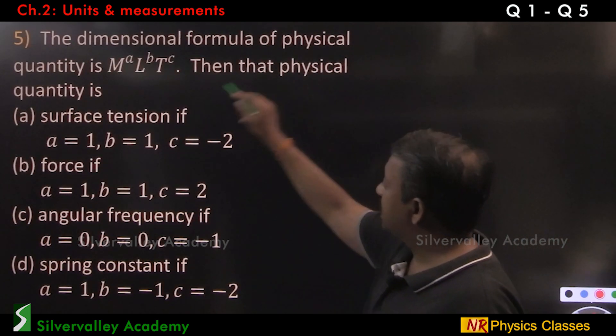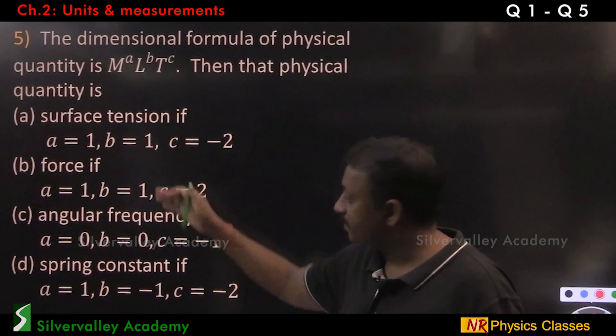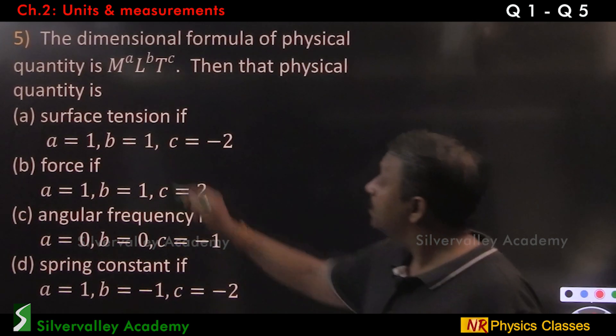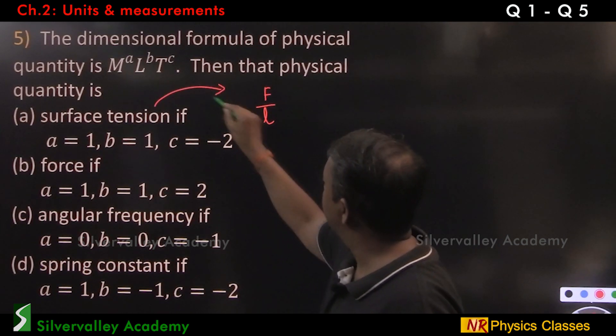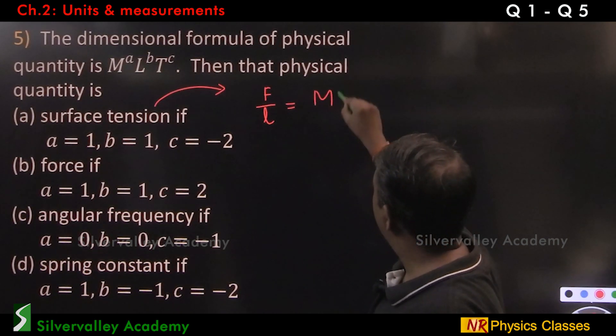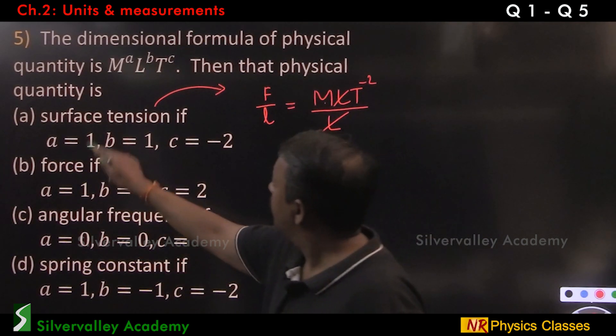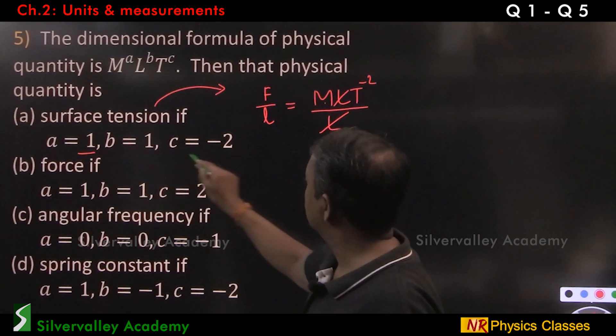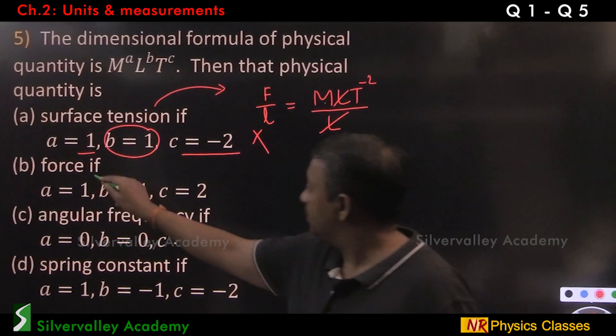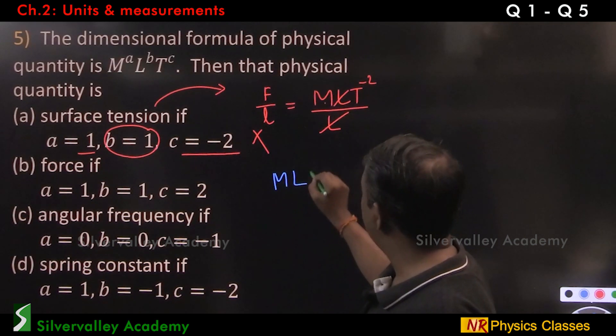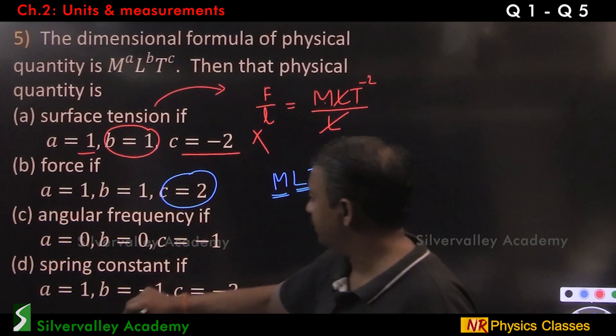The dimensional formula of a physical quantity is M^a L^b T^c. Then that physical quantity is, we have to check all this. It takes some time. Surface tension, if surface tension is force per length. So, surface tension is force per length. Force is M L T minus 2 by L. So, M T minus 2. M to the power of a T minus 2. But there is this B. So, this cannot be the force. Force is M L T minus 2. Mass into acceleration. There is no minus. So, something is wrong here. Therefore, this is not the answer.